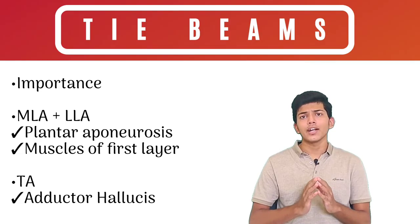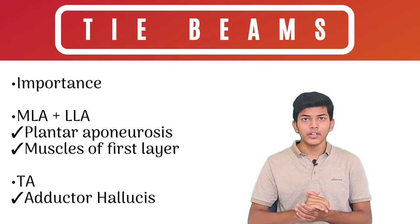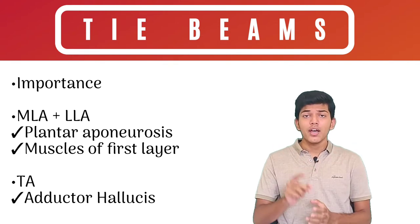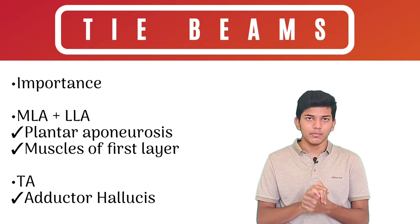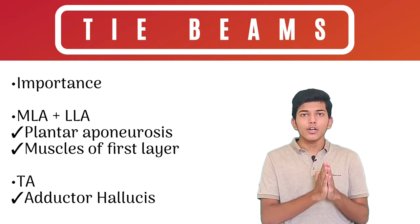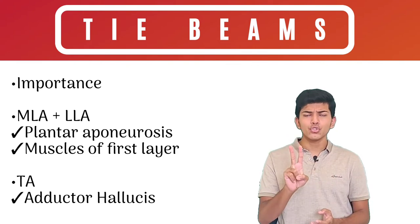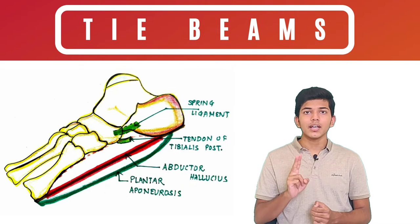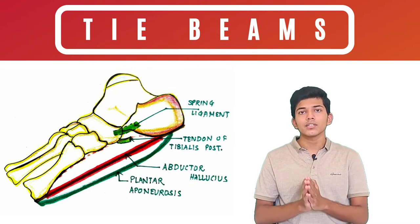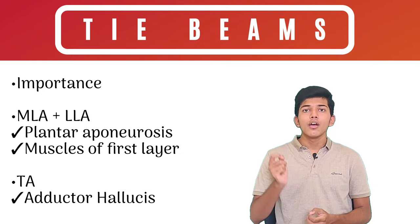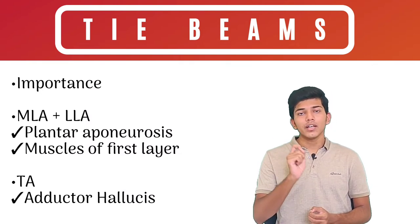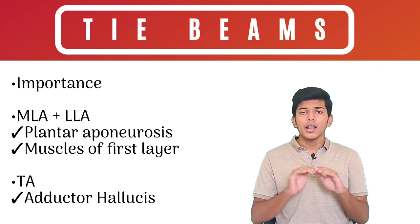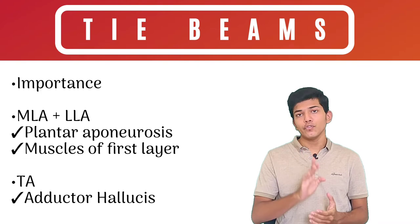To prevent the flattening of arches and maintain concavity, it is important to keep the ends pulled together, and this is facilitated by tie beams. For the medial and lateral longitudinal arches, two structures act as tie beams: the plantar aponeurosis and the muscles present in the first layer of the sole. For the transverse arches, the adductor hallucis acts as the tie beam.